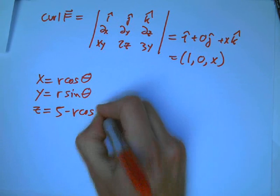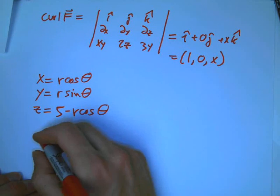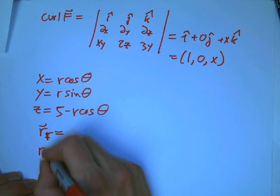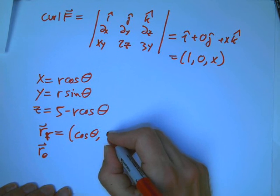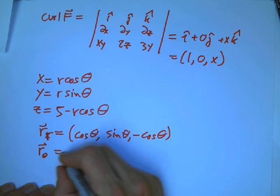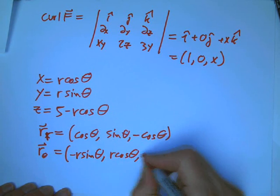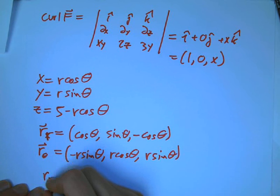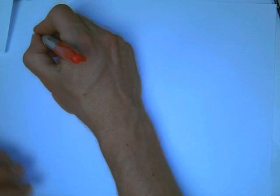So if x and y are going to be given by polar and z is known to be in terms of x, then here's our x, y, and z in terms of r and theta. This is very similar to an example I did before. Okay, so now we need to get the dS, so r sub r and r sub theta. So that's going to be cosine theta, sine theta, minus cosine theta. And that's going to be minus r sine theta, r cos theta, and then plus r sine theta. And then we're going to get the cross product. I'll have to put that on another page.